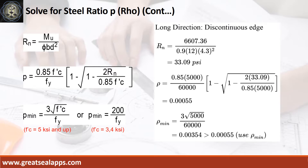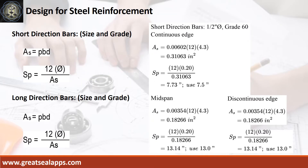Given long direction, discontinuous edge moment equals 6,607.36 inch-pounds. Resistance factor equals 0.9, b equals 12 inches, and d equals 4.3 inches. The beam design ratio RN equals 33.09 PSI, and reinforcement ratio rho equals 0.00055. Use rho minimum of 0.00354.